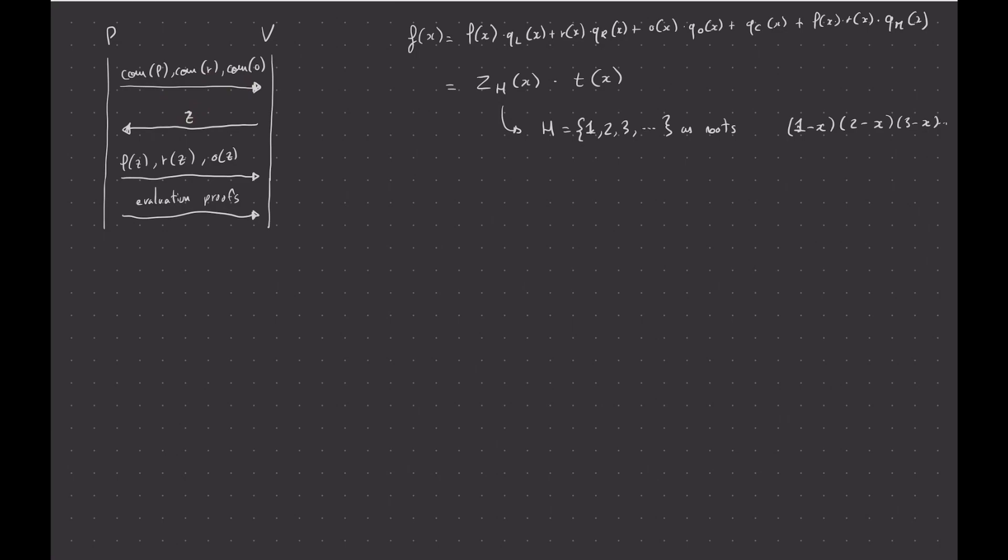I told you how that worked, and basically, you can just verify these evaluation proofs, and you know that these are indeed the evaluation of this polynomial at the point z. Cool. And so that's pretty much the protocol. Imagine that you're the verifier. You have everything to check that you can reconstruct f of z via the evaluation that you just received.